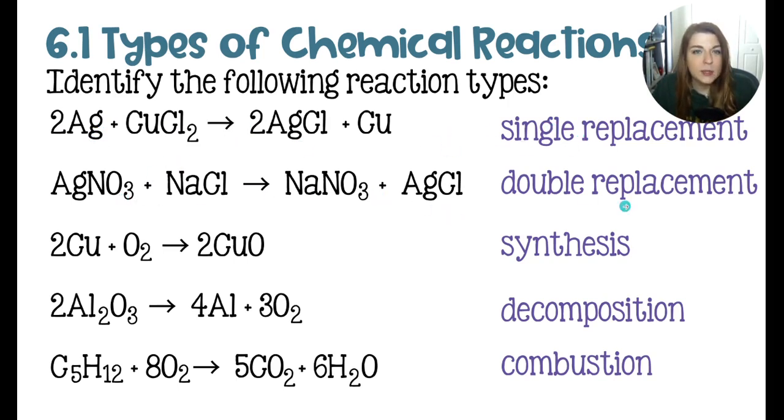Secondly, we have a double replacement, which, remember, is a swapping of partners. In this case, we have not quite a binary compound, but it's ionic. We have two ions here, silver and nitrate, and those two are going to swap places with the sodium and the chloride.